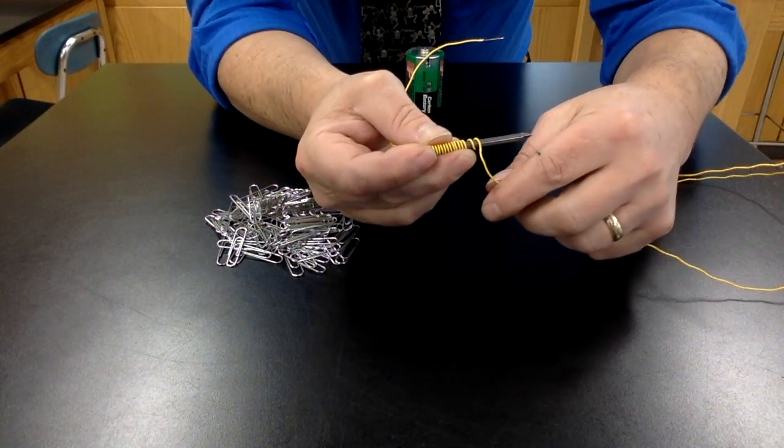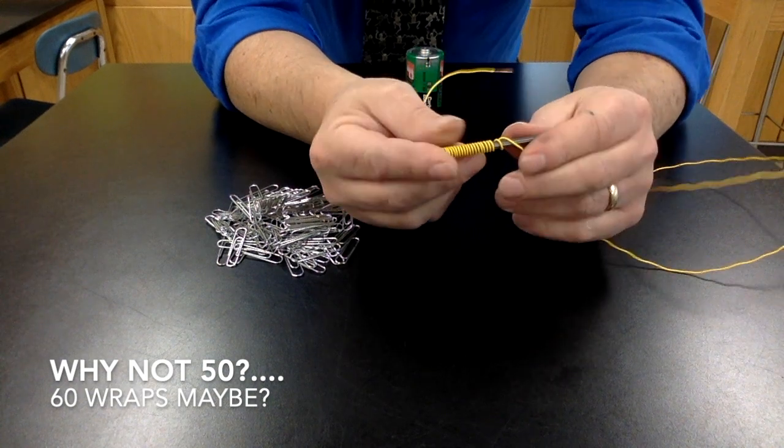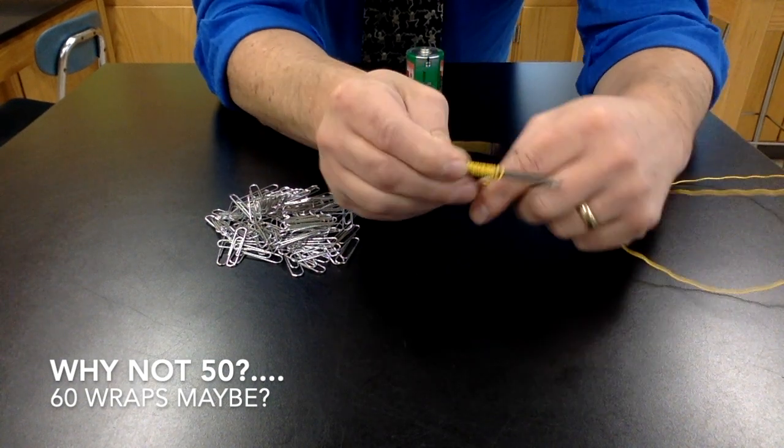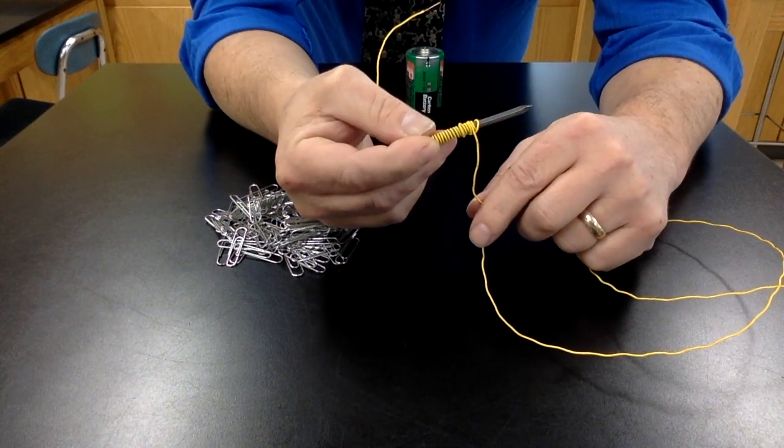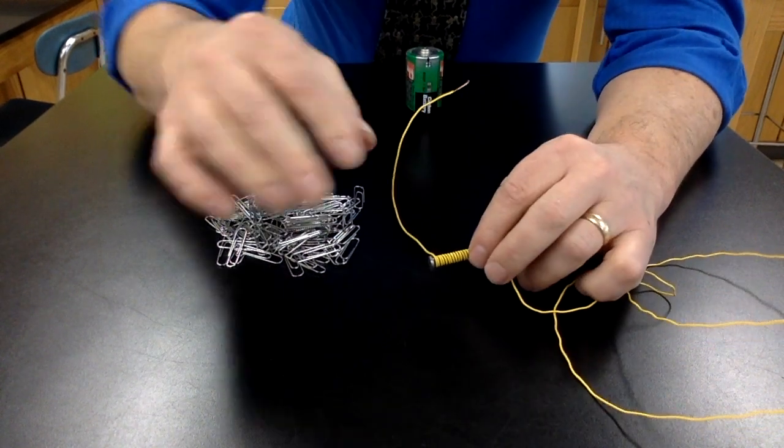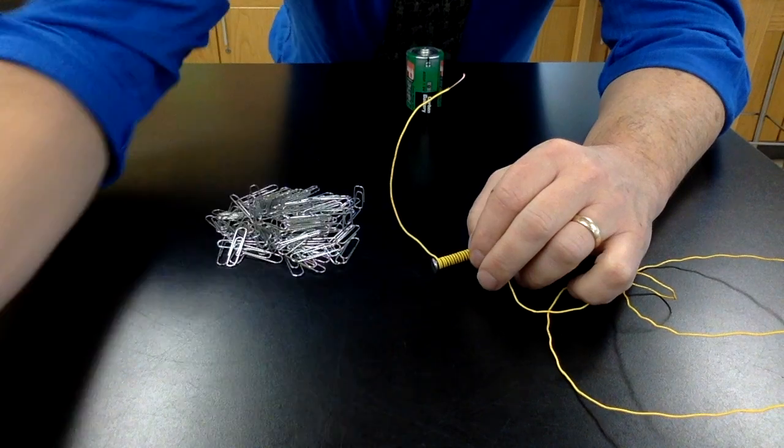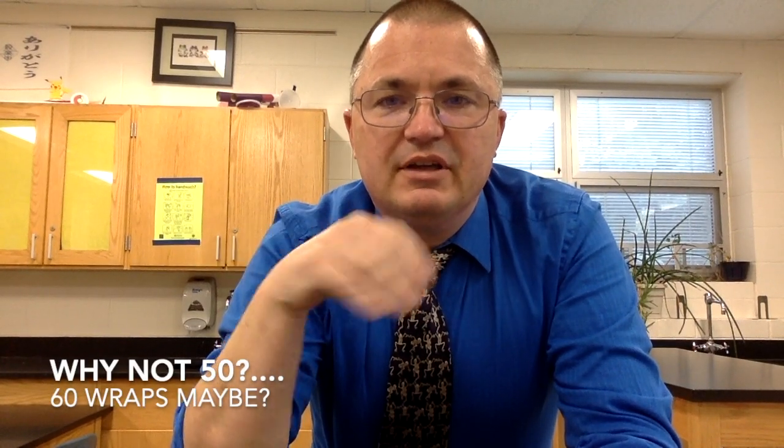And then I'm going to do it again with thirty, and then forty wraps. And it's okay if the wraps go on top of each other in order to get there. You're going to do that three times for each of the settings. So, three times at ten wraps, three times at twenty, three at thirty, three at forty. And you're going to average those together to get some good data and graph it. And then you're going to have to answer some questions about what happened and why it happened.